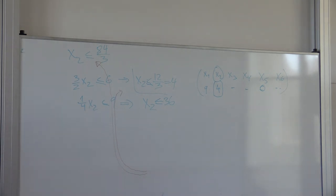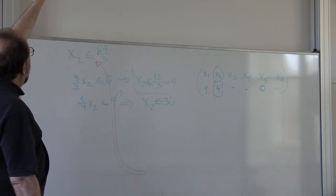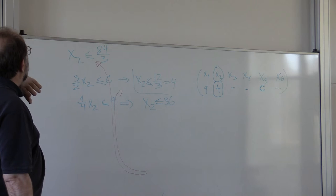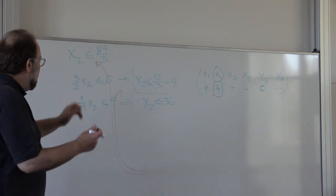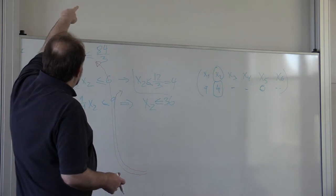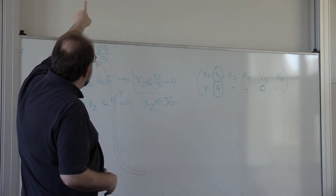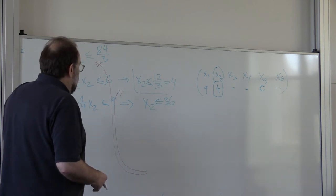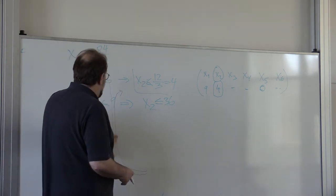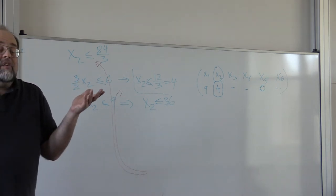So you simply see for as long as you have in the constraint a variable with positive factor, you try to push it up. How much can you push it up? The constraints tell you how much you can push it up without violating positivity of the variables.